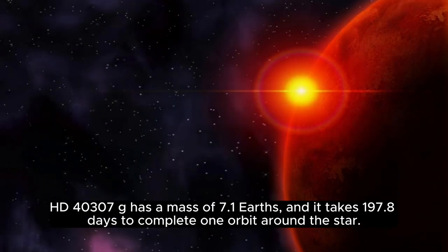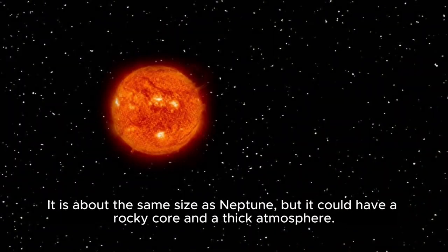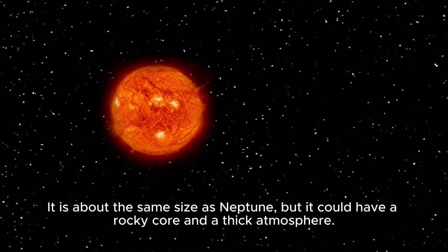HD 40307 G has a mass of 7.1 Earths, and it takes 197.8 days to complete one orbit around the star. It is about the same size as Neptune, but it could have a rocky core and a thick atmosphere.